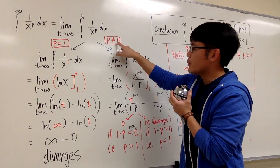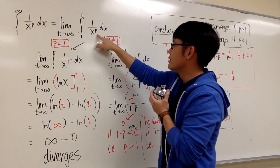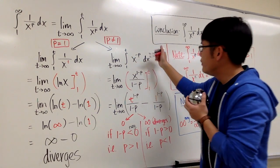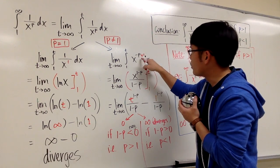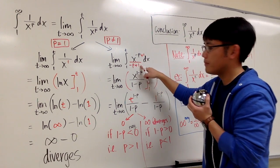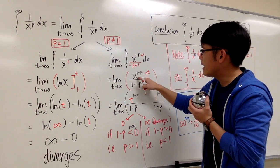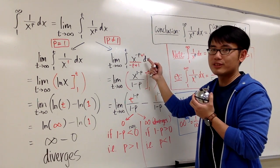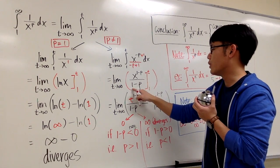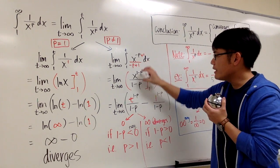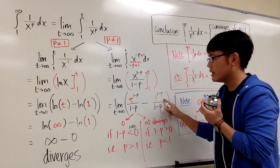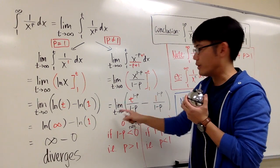When p is not equal to 1, we rewrite 1 over x to the p as x to the negative p, and apply the reverse power rule. Adding 1 to the exponent gives 1 minus p, and we divide by that same exponent. So the antiderivative is x to the 1 minus p, divided by 1 minus p. We then evaluate from 1 to t and take the limit as t approaches infinity.